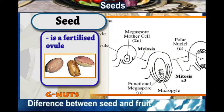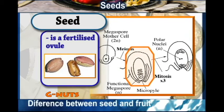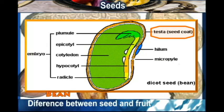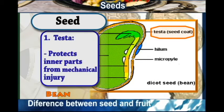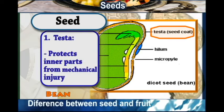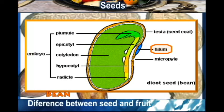A seed is made up of around six items. The first item is the testa, which is the outer cover — it is the protective part of the inner parts. It protects them from mechanical injury. You can see the testa clearly in the bean seed.